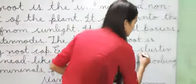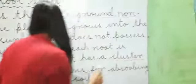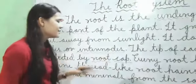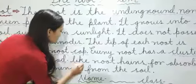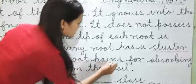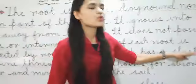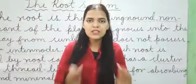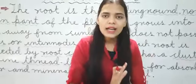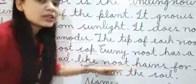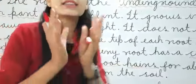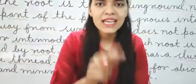Every root has a cluster of fine thread-like roots. Students, cluster means hota hai guchha — guchha numa. Toh har ek root jo hoti hai, uske paas ek hair-like, thread-like — means dhaage numa root hairs hote hain. Guchha hota hai dhaage numa roots ka, jise kehte hain root hairs.